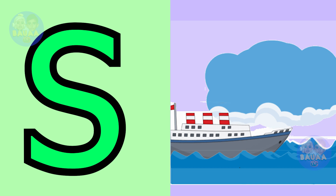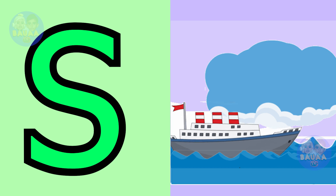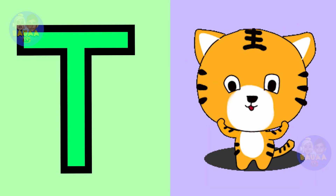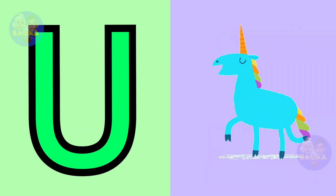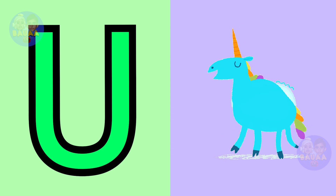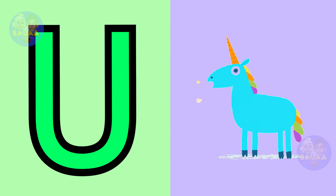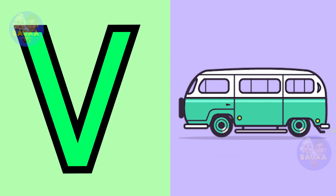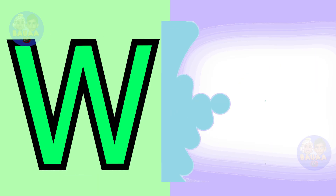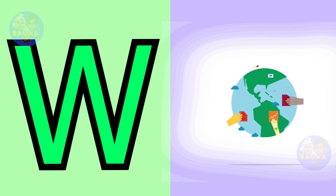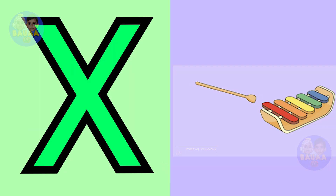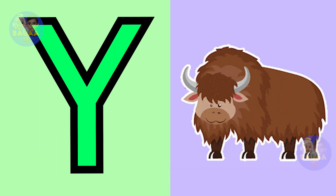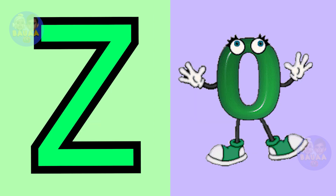S for sheep, T for tiger, U for unicorn, V for van, W for world, X for xylophone, Y for yard, Z for zero.